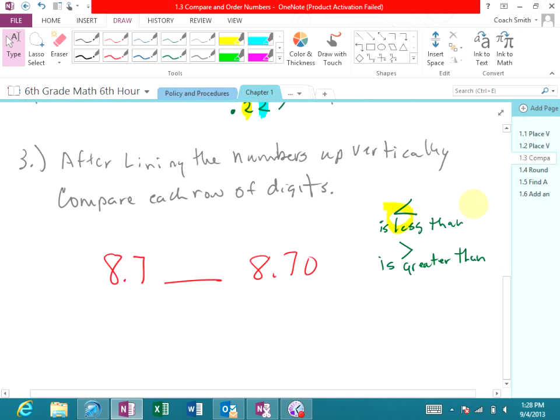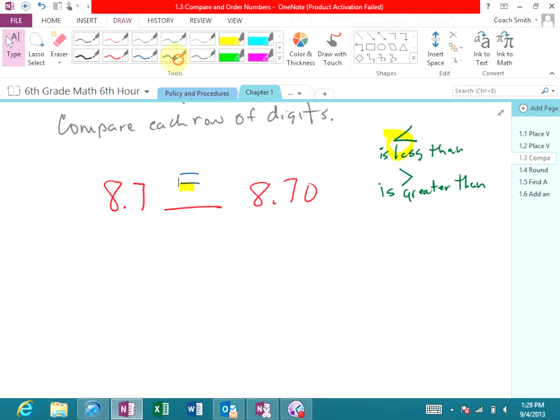So back to our example, 8.7 and 8.70, so what goes in that blank? Somebody raise your hand if you know what goes in that blank. Quade? Equal to. Equal sign. Because I said on day two of this class, I said that when you add a zero to an end of a decimal number it does not change it.